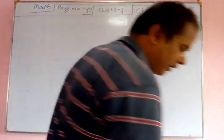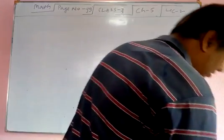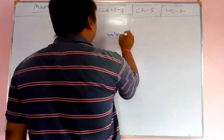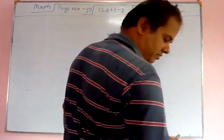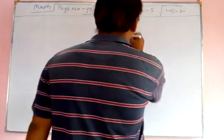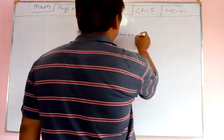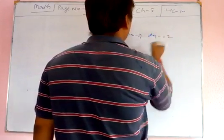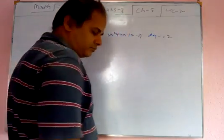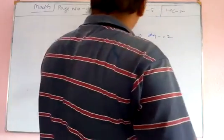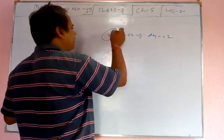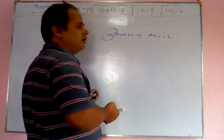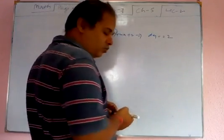Example number 3: Write the degrees of the polynomial 3x² plus 4x plus 2. The degree of this polynomial is 2, because the highest power of the variable in this term is 2.